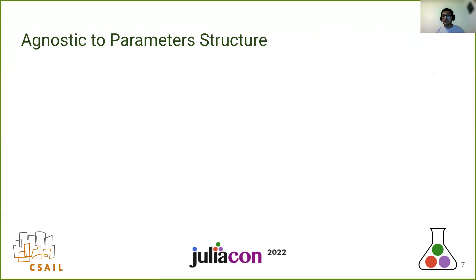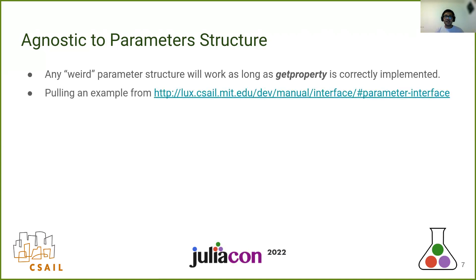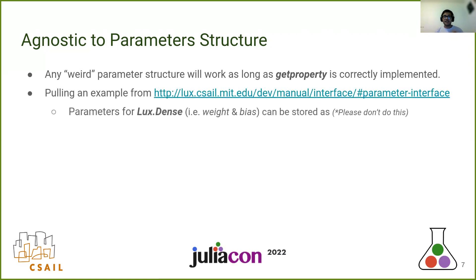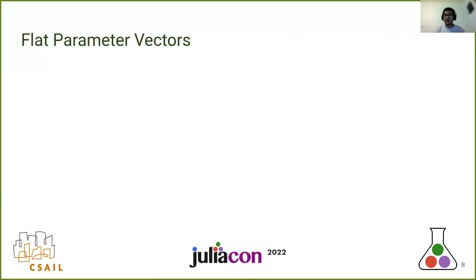Another interesting property is that Lux is completely agnostic to the parameter structure, which means you can have any storage for your parameters, but as long as the get property is correctly implemented, it just works. For example, let's say you want to implement a new structure for the parameters of Lux.dense, which requires weight and bias. You could have a structure which contains my_weight and my_bias, and if you're queried with weight you pass in my_weight, and if queried with bias you pass in my_bias. This shows how flexible Lux is in terms of parameters, and also leads to some other interesting properties.